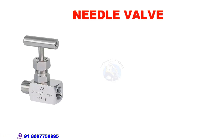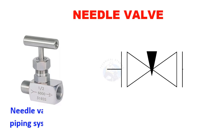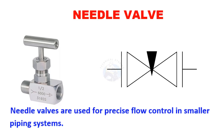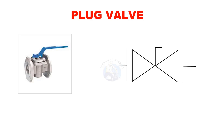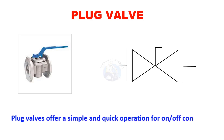Needle valves are used for precise flow control in smaller piping systems. Plug valve. Plug valves offer a simple and quick operation for on and off control.